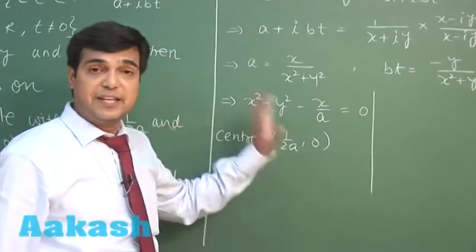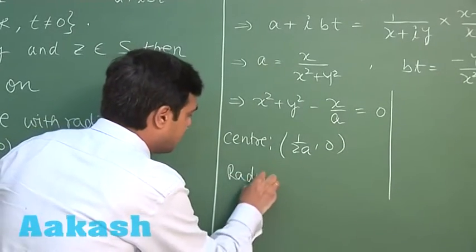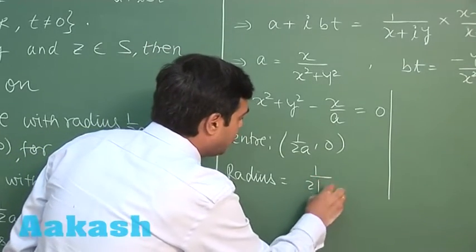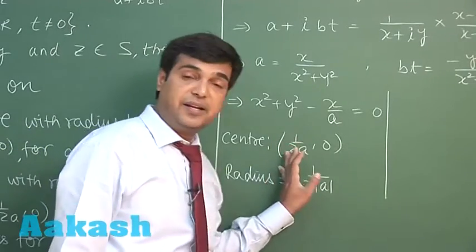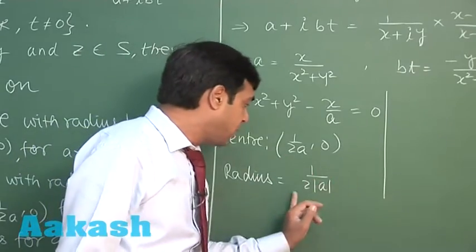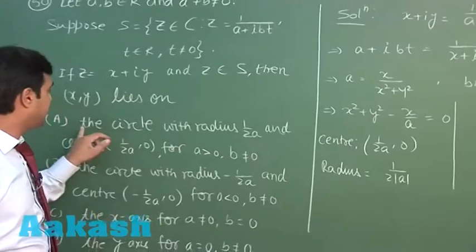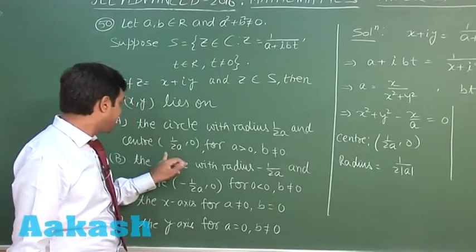While the radius is 1/(2|a|), because when we find the radius √(g²+f²-c), that gives me 1/(2|a|). Now from the options, when we look at the first one: the circle with radius 1/(2a) and center (1/(2a), 0) for a as positive—yes, this option is the correct one.